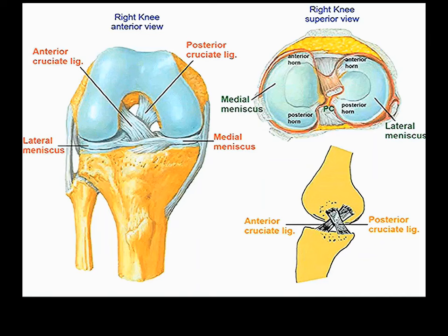The anterior cruciate ligament is so named because it arises anteriorly on the tibia, and the posterior cruciate because it arises posteriorly on the tibia — they cross one another. The posterior cruciate prevents driving the tibia posteriorly; the anterior cruciate prevents driving the tibia anteriorly. The ACL is also very important in stabilizing the knee in full extension and preventing hyperextension.